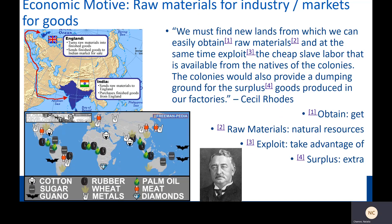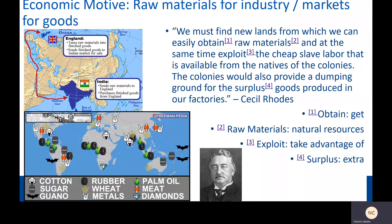First and foremost, let's talk about the economic motive for imperialism. This is a material cause. The material advantage that Europeans were seeking — the thing that they wanted — was raw materials for industry and markets to sell goods. This means they wanted the basic ingredients needed to make finished products in factories: natural resources like rubber, metals, palm oil, and so on. And they wanted a market to sell the goods to. After they take all this stuff and make things in factories, they need to sell those things — so the colonies also become the place they sell things to.